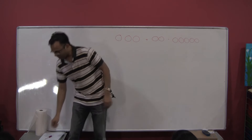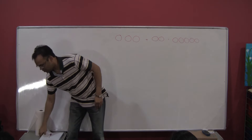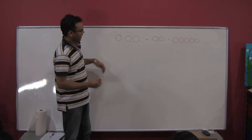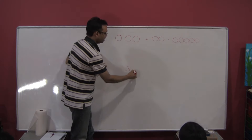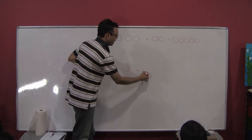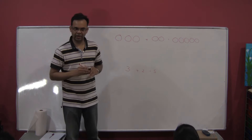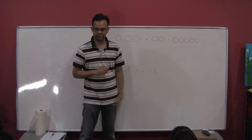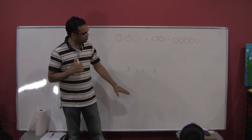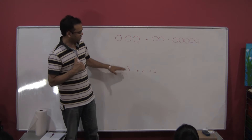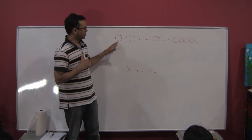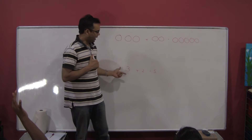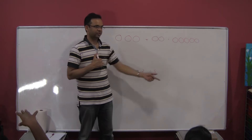Why do you think the teacher did not start immediately with numbers, and first started with pictures — one, two, three, one, two — and only later did numbers? Why don't they start with numbers right away?